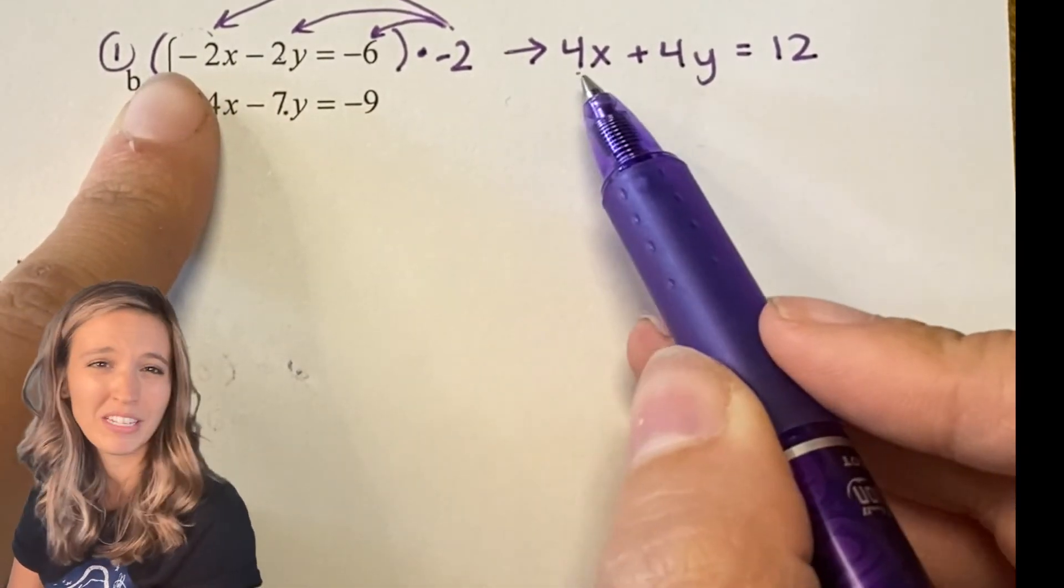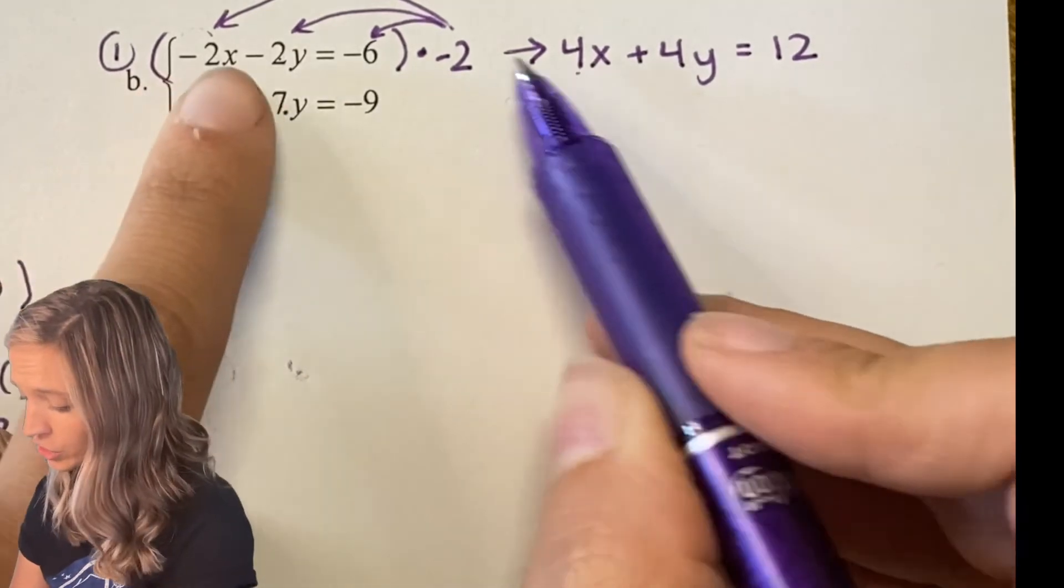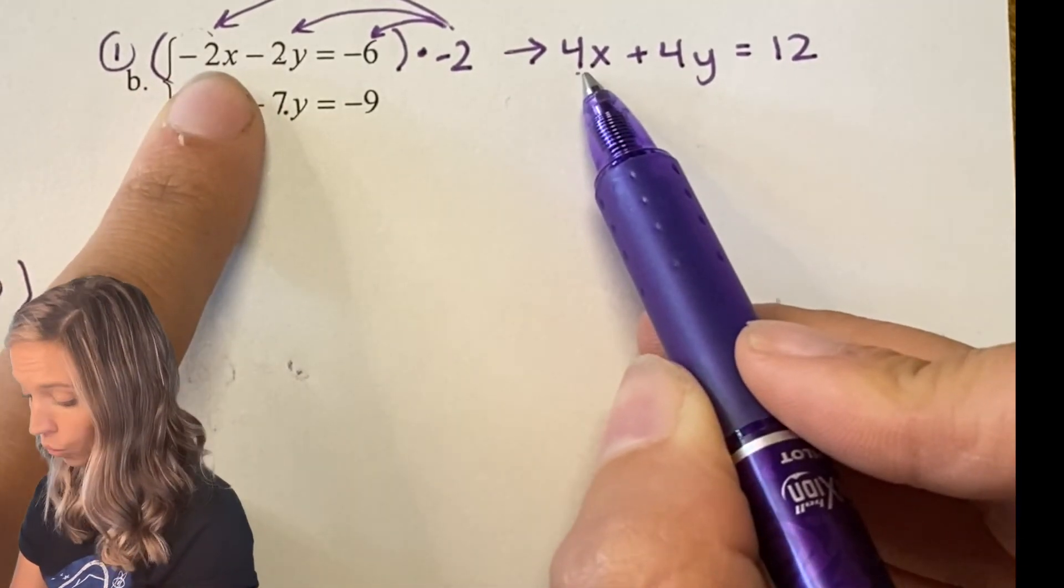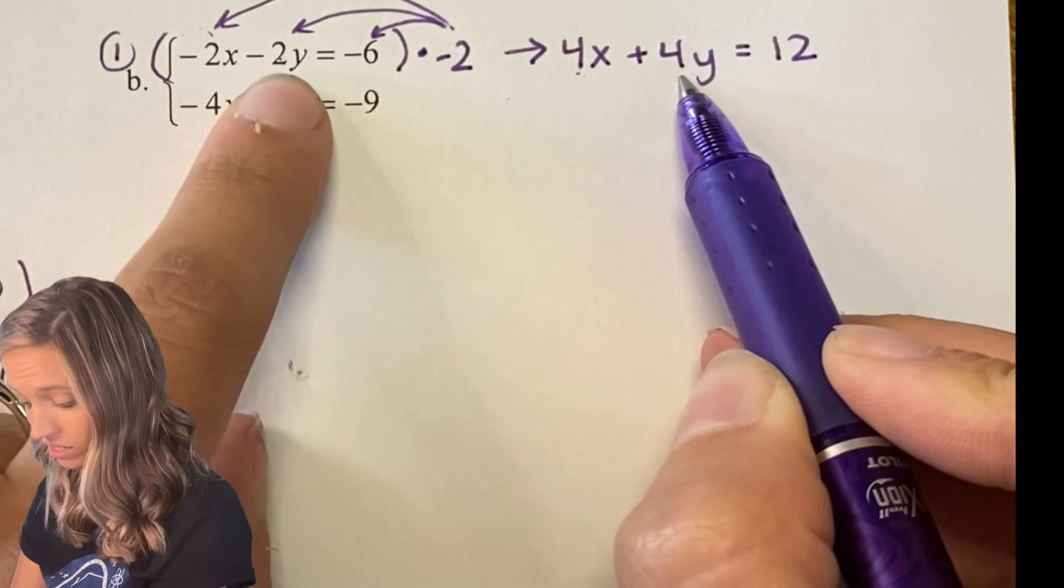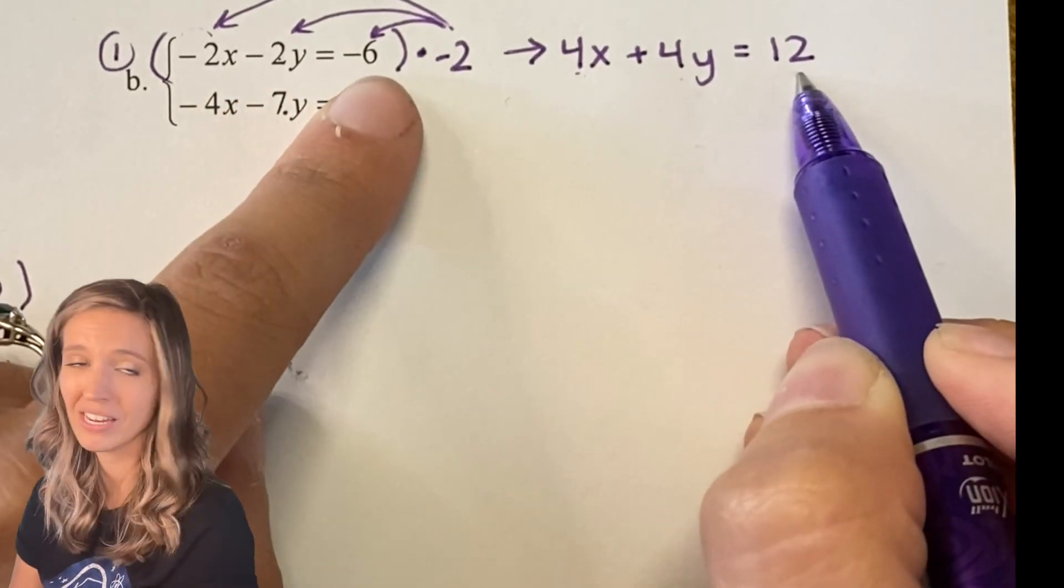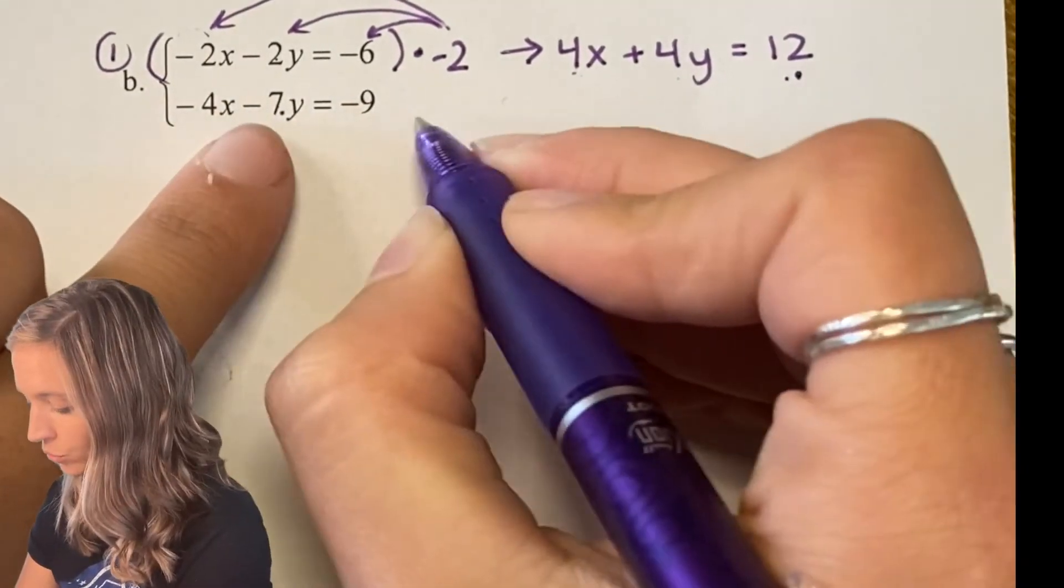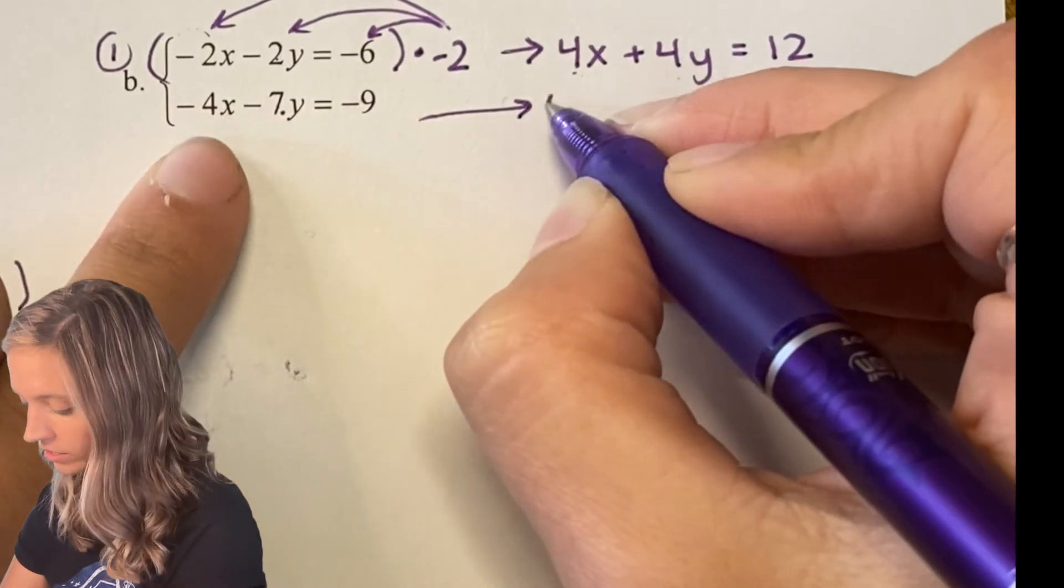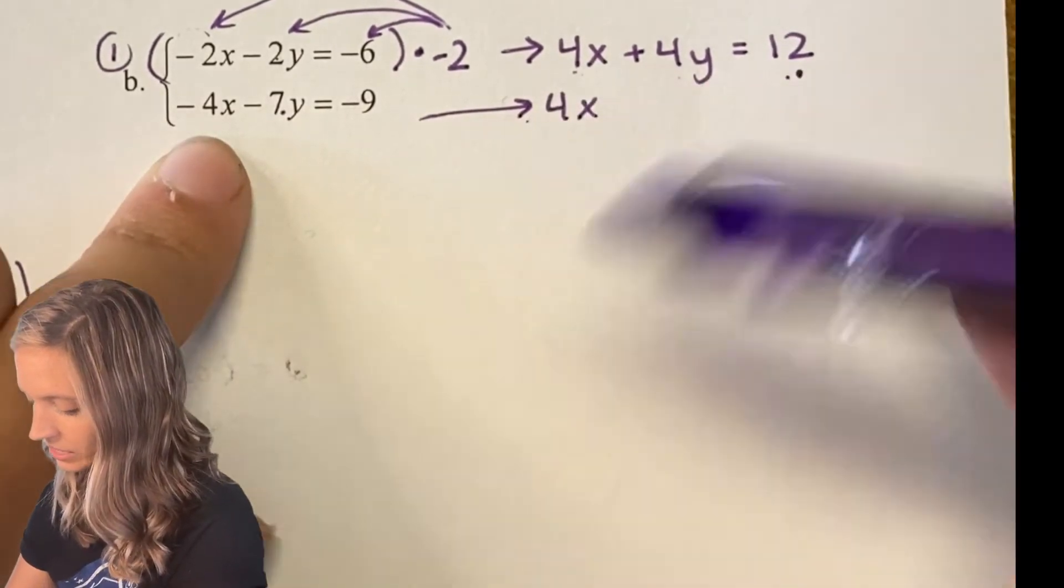We want to be careful not to make mistakes, so it's best to rewrite it all over here. Now really check to make sure you perform that multiplication correctly. An error here is going to mess up all of our solving work. So -2 times 2x is 4x, -2 times -2y is positive 4y, and -2 times -6 is positive 12. This equation we decided we didn't have to change anything on so I'm just going to rewrite it exactly as it's written.